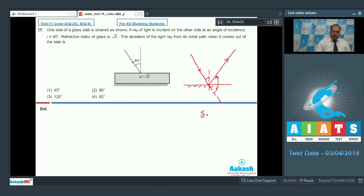So the deviation is equal to 180 degree minus 2 times angle of incidence. So if I substitute the value of i, then it comes out to be 60 degree. So option 4 is the correct answer.